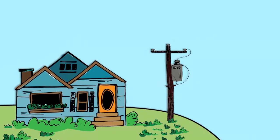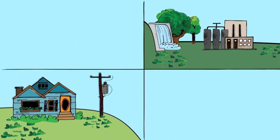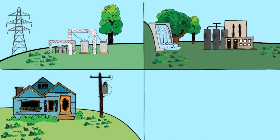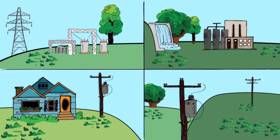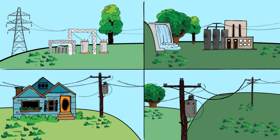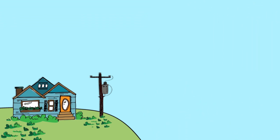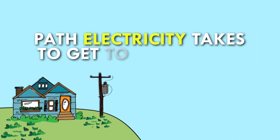The electric grid is a complex system of power plants, transmission lines, substations, and distribution lines that transmit electric power from the place where it's generated all the way to consumer members at the end of the line. Here's a breakdown of the path electricity takes to get to your home.